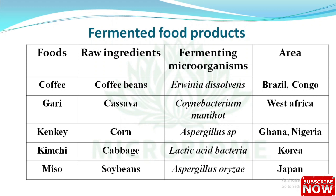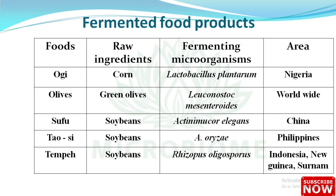Miso — raw ingredient: soybeans, fermenting microorganism: Aspergillus oryzae, area: Japan. Ogi — raw ingredient: corn, fermenting microorganism: Lactobacillus plantarum, area: Nigeria. Olives — raw ingredient: green olives, fermenting microorganism: Leuconostoc mesenteroides, area: worldwide.